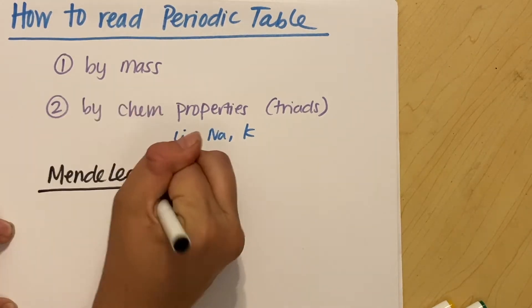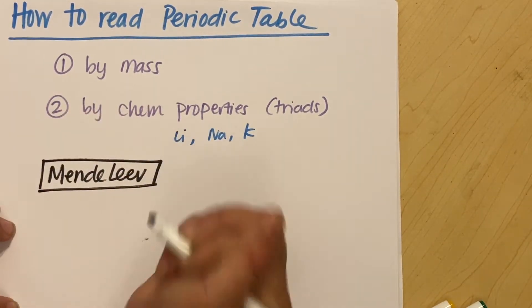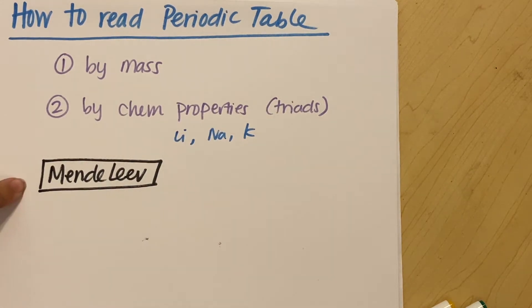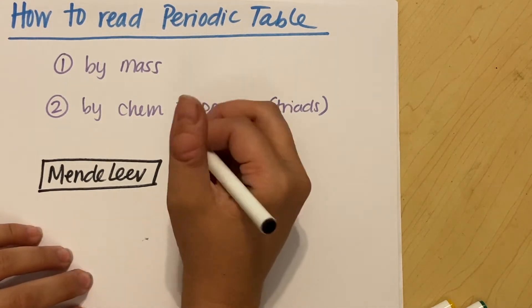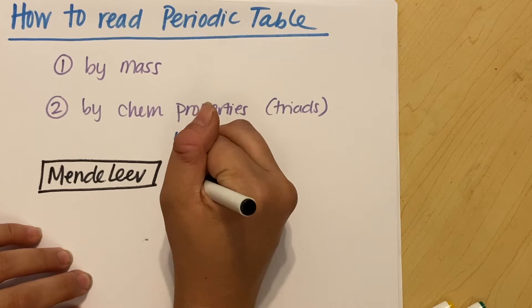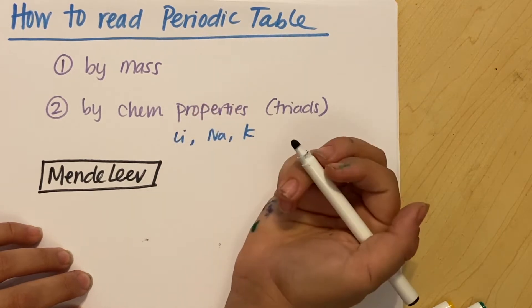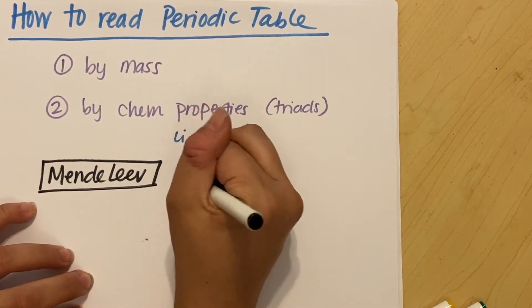We get a brilliant mind that solves this problem for us: Dmitry Mendeleev. He is the person who invented the periodic table.